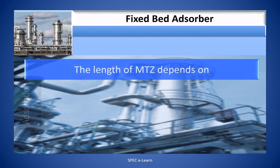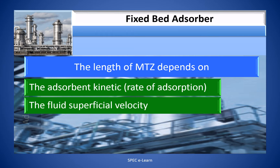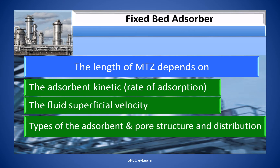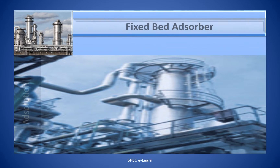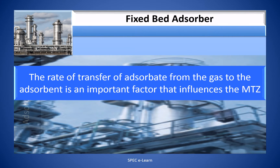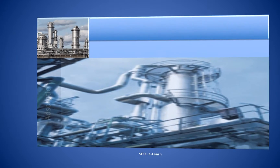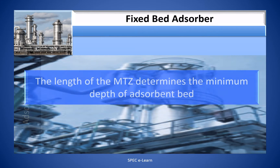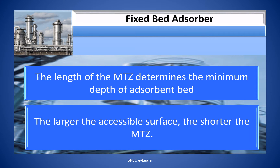The length of the mass transfer zone depends on the adsorbent kinetics (that is, the rate of adsorption), the fluid superficial velocity, types of adsorbent and pore structure and distribution, and the gas inlet and outlet concentrations. The rate of transfer of adsorbate from the gas to the adsorbent is an important factor that influences the mass transfer zone. A shallow mass transfer zone indicates good adsorbent utilization. The length of the mass transfer zone determines the minimum depth of the adsorbent bed. The larger the accessible surface, the shorter the mass transfer zone.